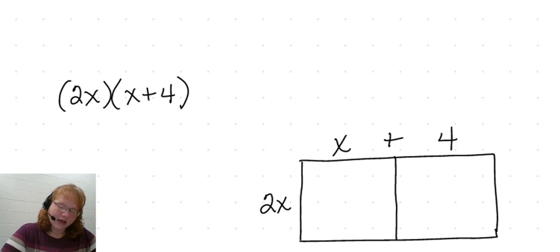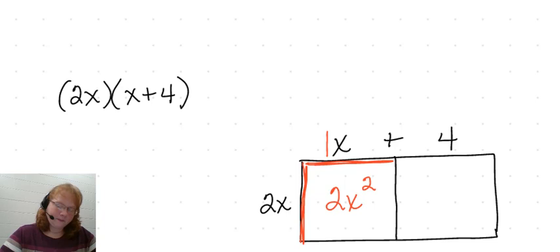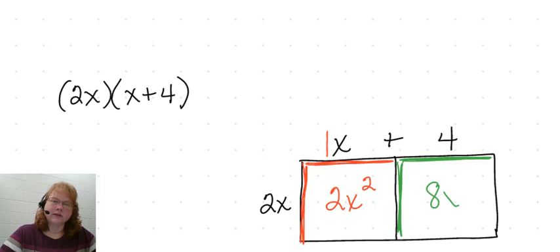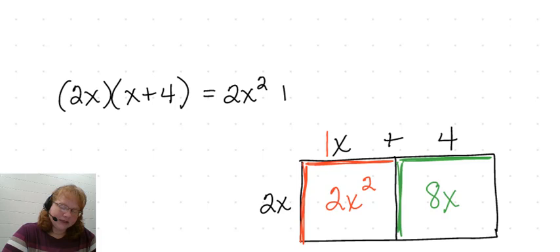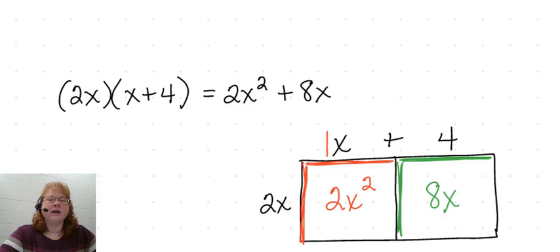The first rectangle has a dimension of 1x and a dimension of 2x. 1 times 2 is 2 and x times x is x squared, so I get 2x squared. And then the second rectangle has 4 times 2x. 4 times 2 is 8, so 4 times 2x is 8x. We still have to add our areas together to get the final answer, giving us 2x squared plus 8x. In this case, there are no like terms, so that is our final answer.